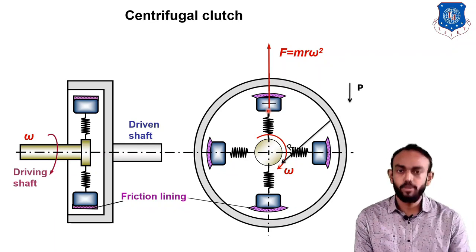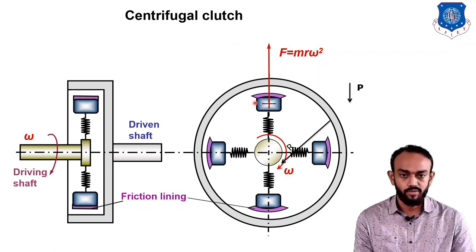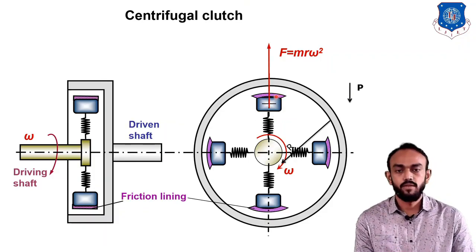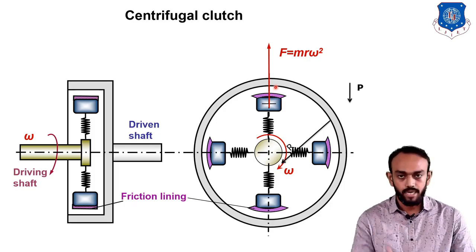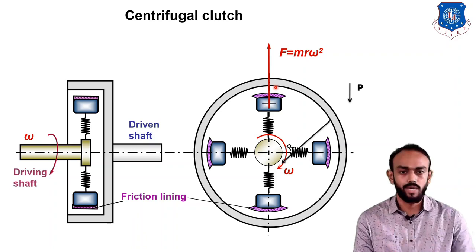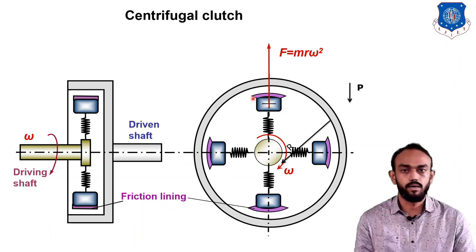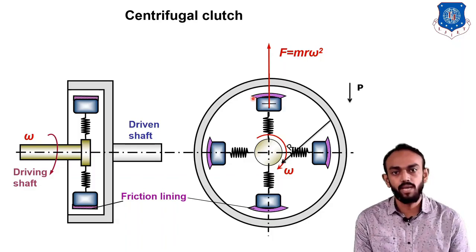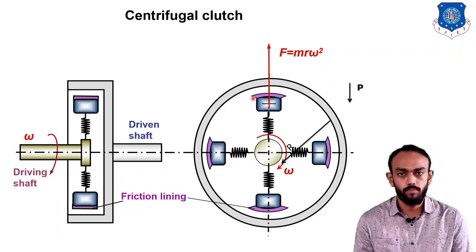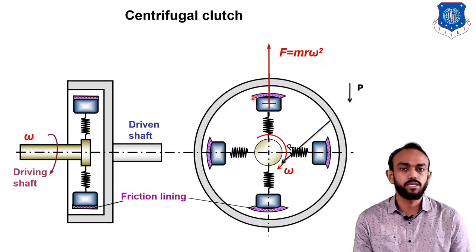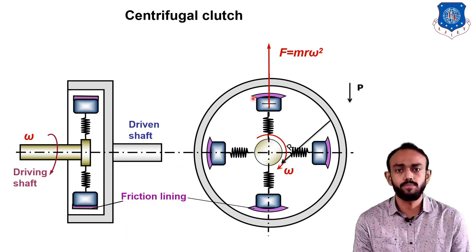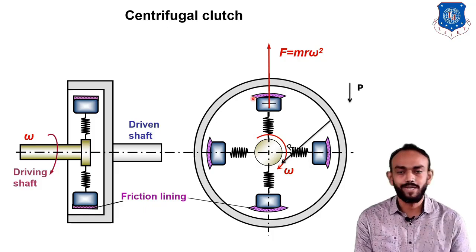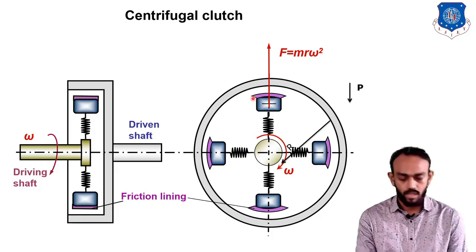In a gearless vehicle this type of clutch is used. As you increase RPM, the centrifugal force increases and the lining contacts the drum. Initially they slide against each other, but after RPM increases beyond a certain point, the friction is sufficient to move together with the drum, and the driving and driven shafts rotate together. Thank you.